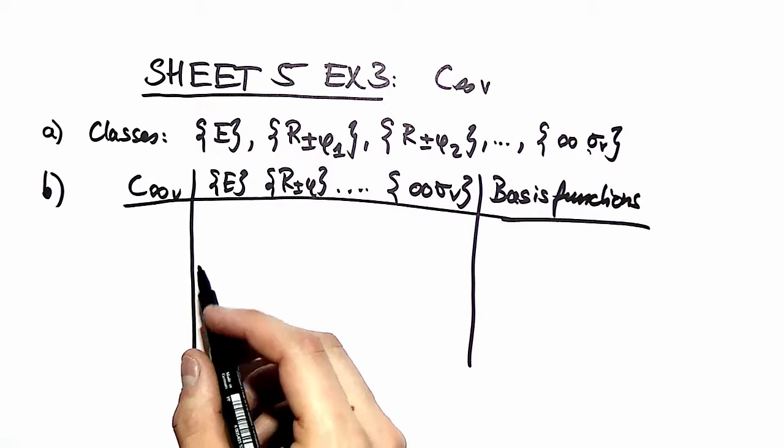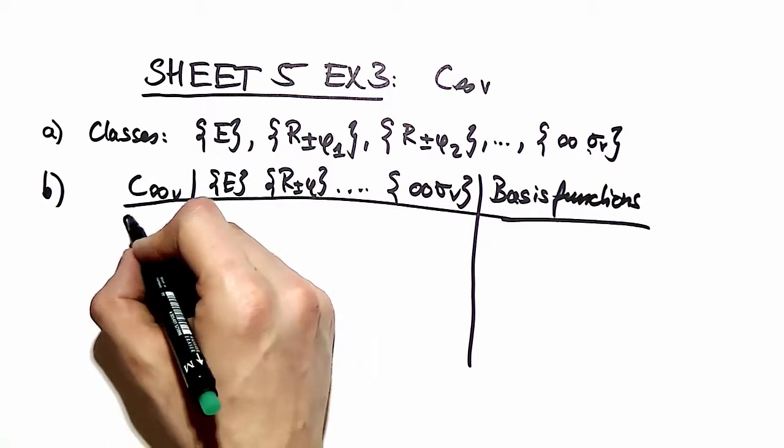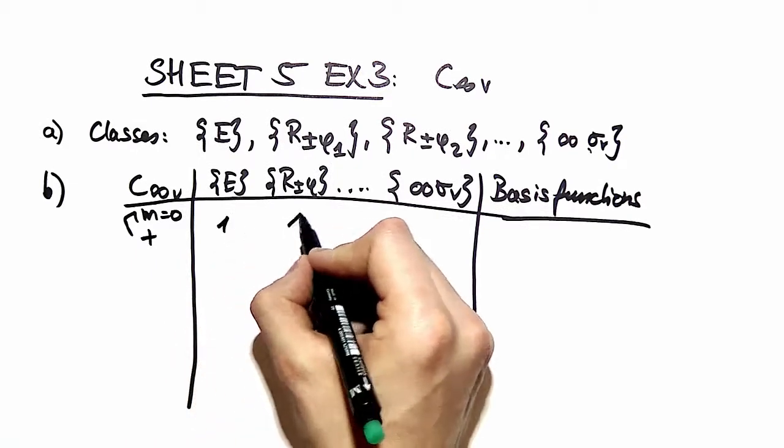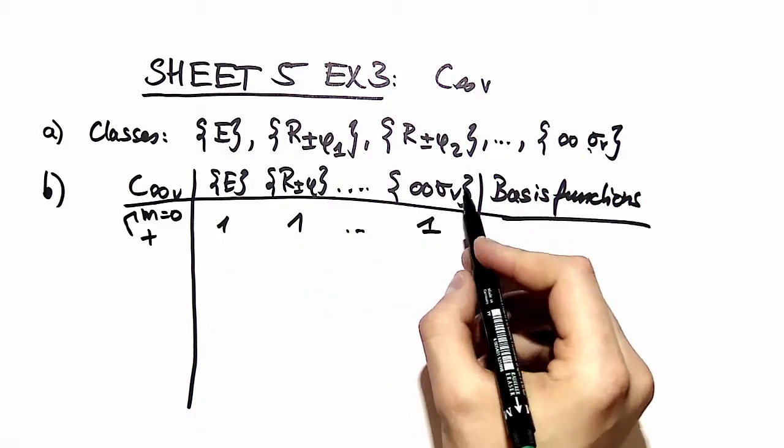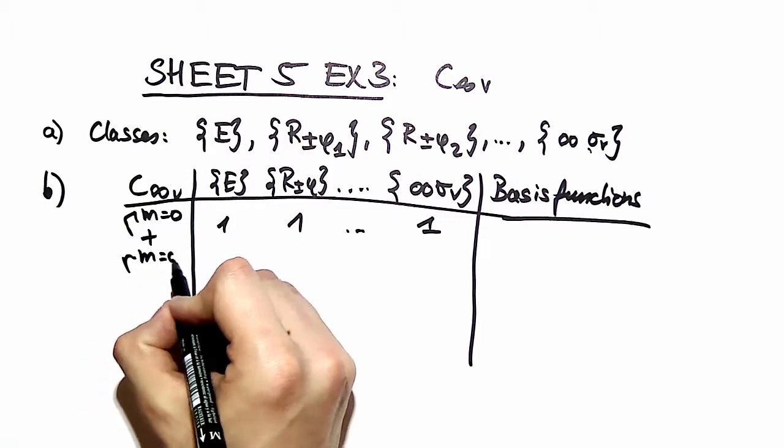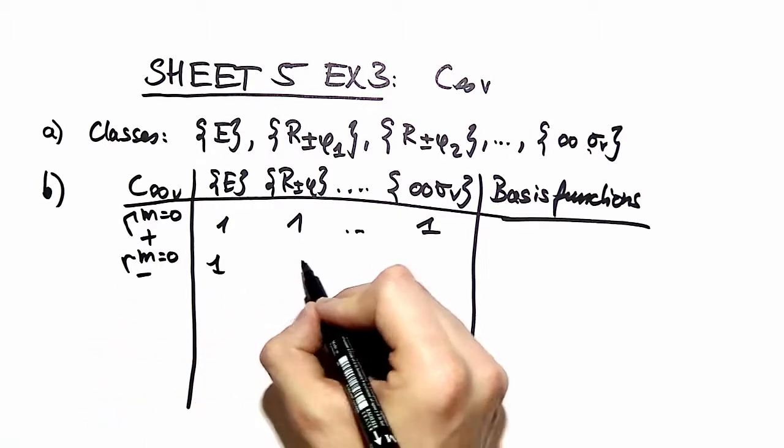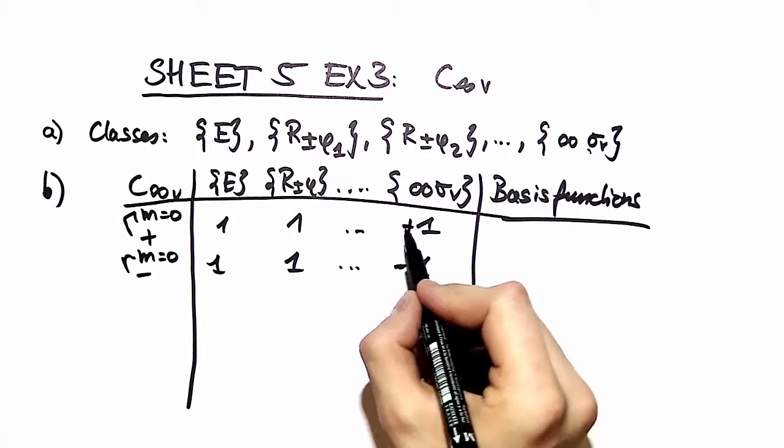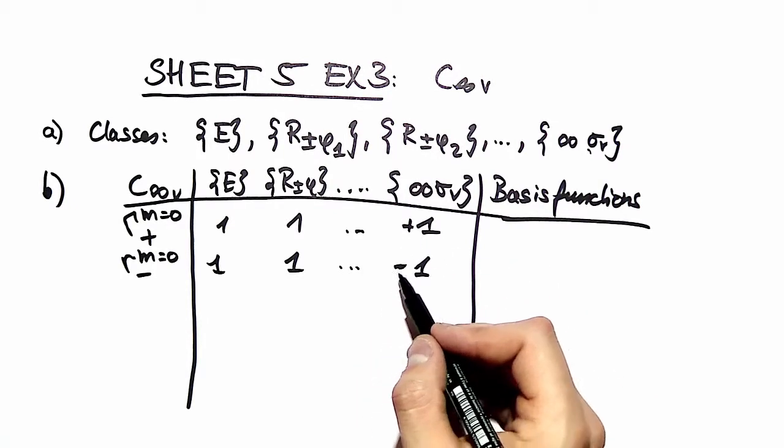This should be nothing new to you. You have the identity representation gamma m zero plus where you have ones everywhere except the elements where you have an inversion. Gamma m zero minus gives you the parity - here you have a minus, here you have a plus. This is the parity representation.